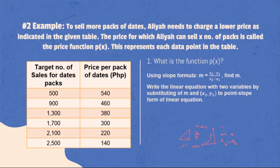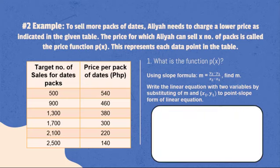Using the slope formula, m = (y₂ - y₁)/(x₂ - x₁), we can find the slope of this function by substituting the first and second ordered pairs from the table. So, m = (460 - 540)/(900 - 500). The result will be -1/5 or -0.2.